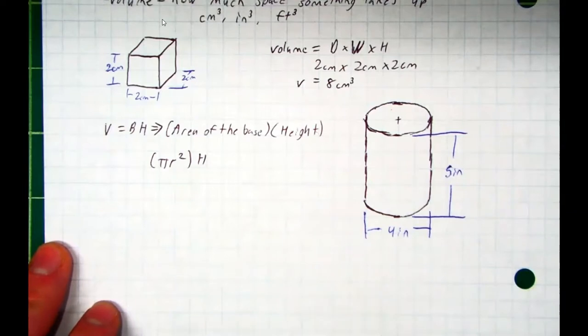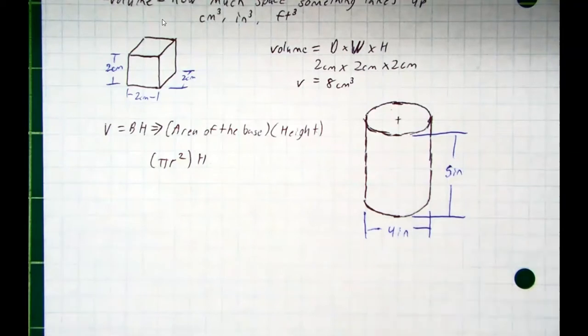This is true for, again, all 3D objects. If it's a triangular prism, find the area of the triangle and then multiply it by the height. Hexagon prism, hexagonal prism, same thing. Find the area of the hexagon, multiply it by the height to get the volume.